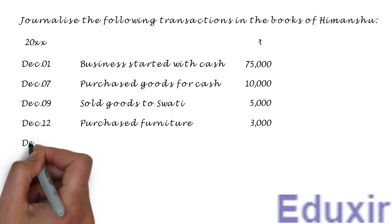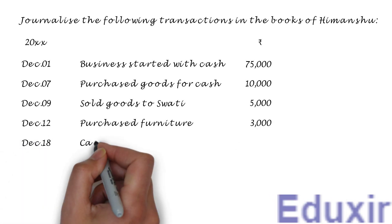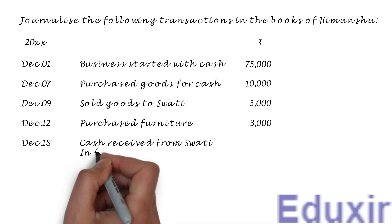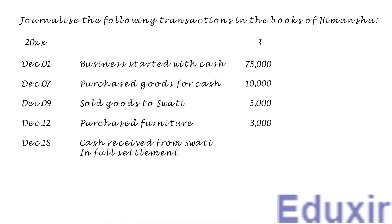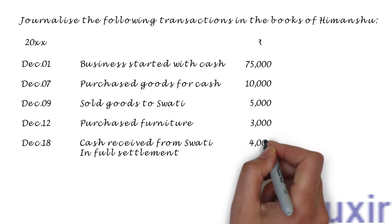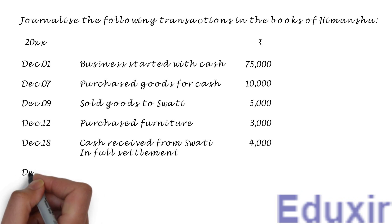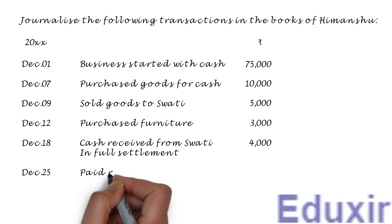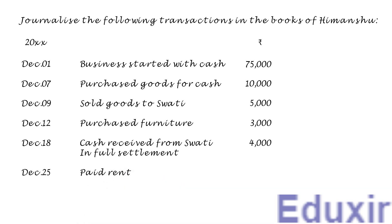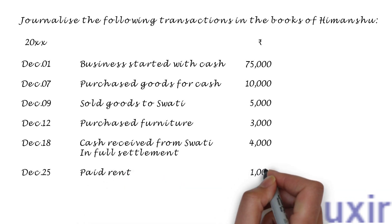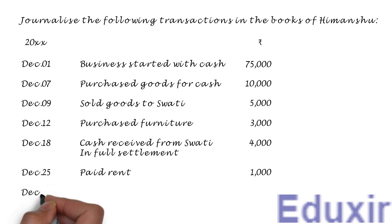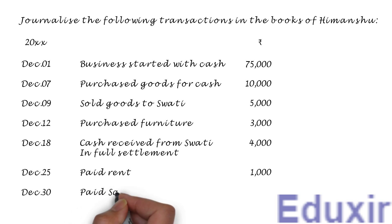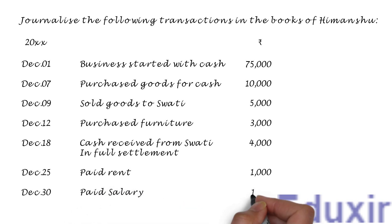On 18th December, Cash received from Swathi in full settlement 4,000 Rs. On 25th December, Paid Rent 1,000 Rs. On 30th December, Paid Salary 1,500 Rs.